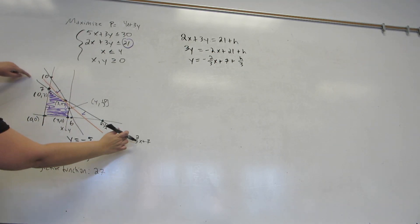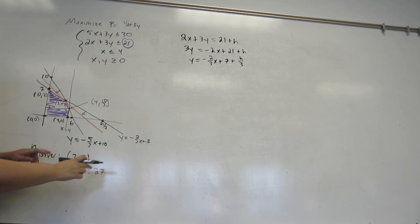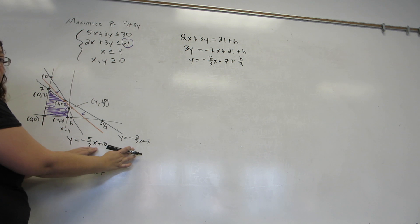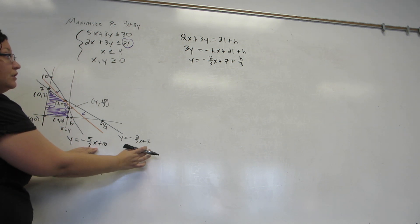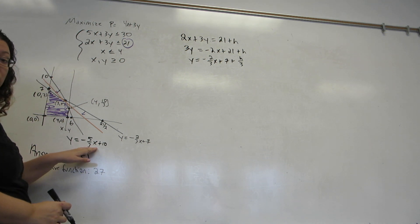The line we're changing is this one. That line intersected with the minus 5 thirds X plus 10 to form our optimal solution of 3, 5. So, I intersected these two lines to find the answer. Now, I'm going to change this one, but I still want to intersect it with the same line to find the answer.